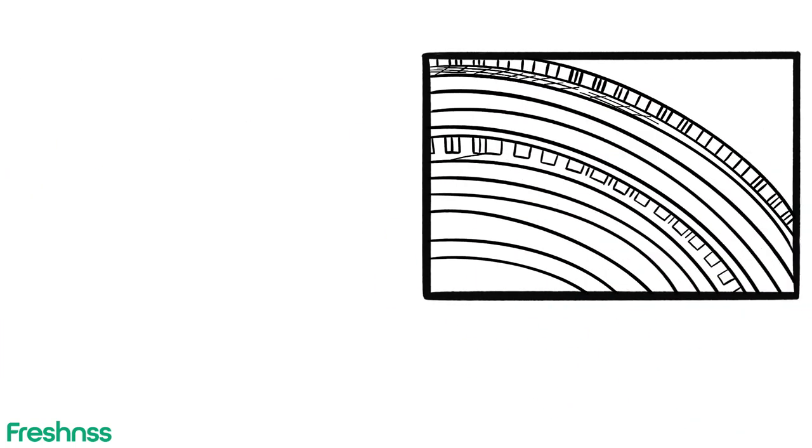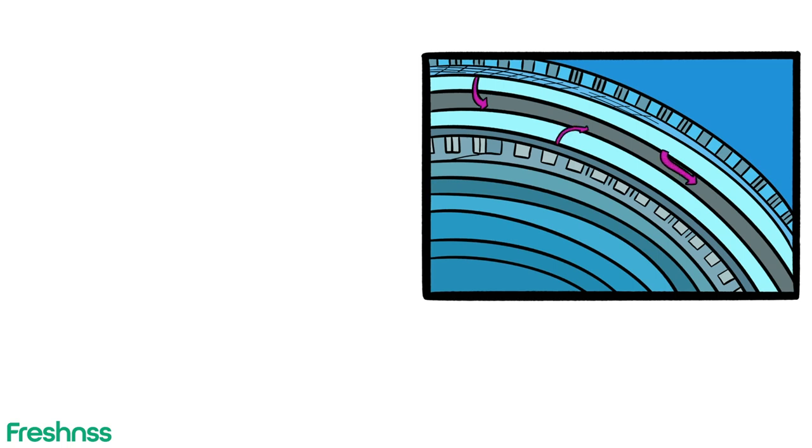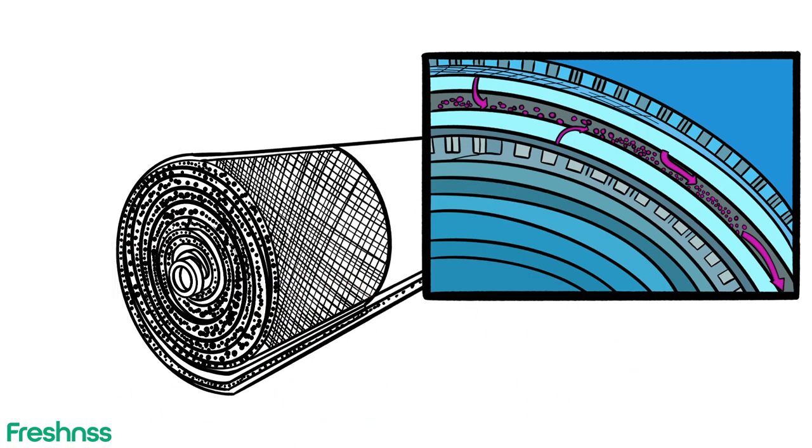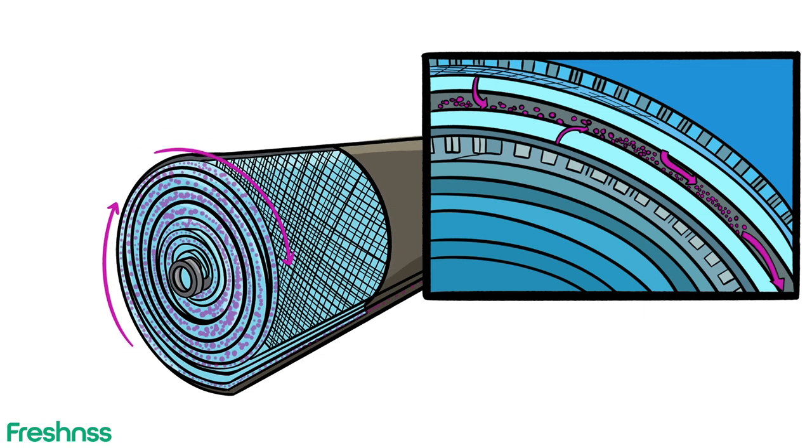Water passes through the membrane surface into the permeate channel. It flows in a spiral direction and collects in the core tube. This water is the final purified water product.